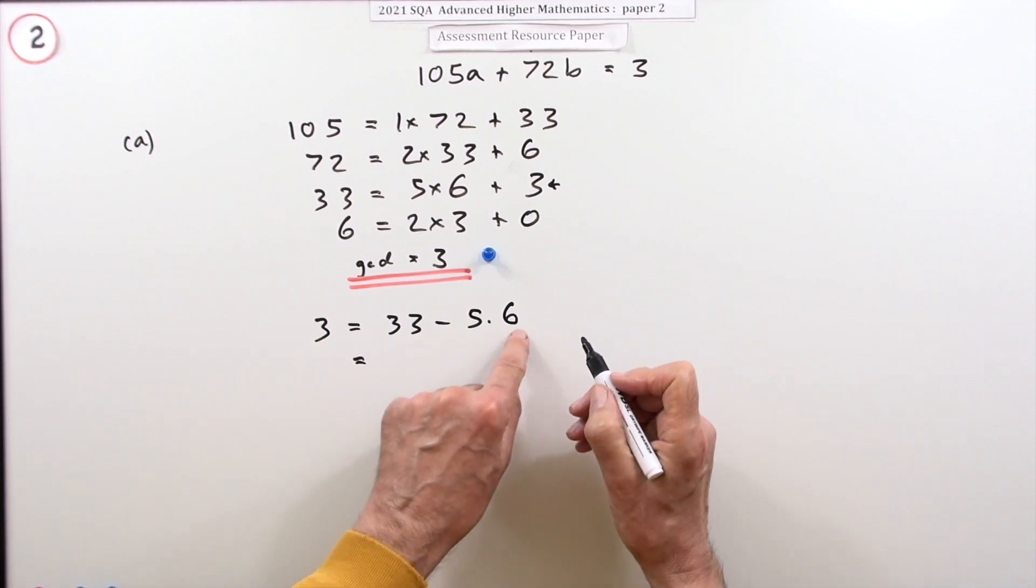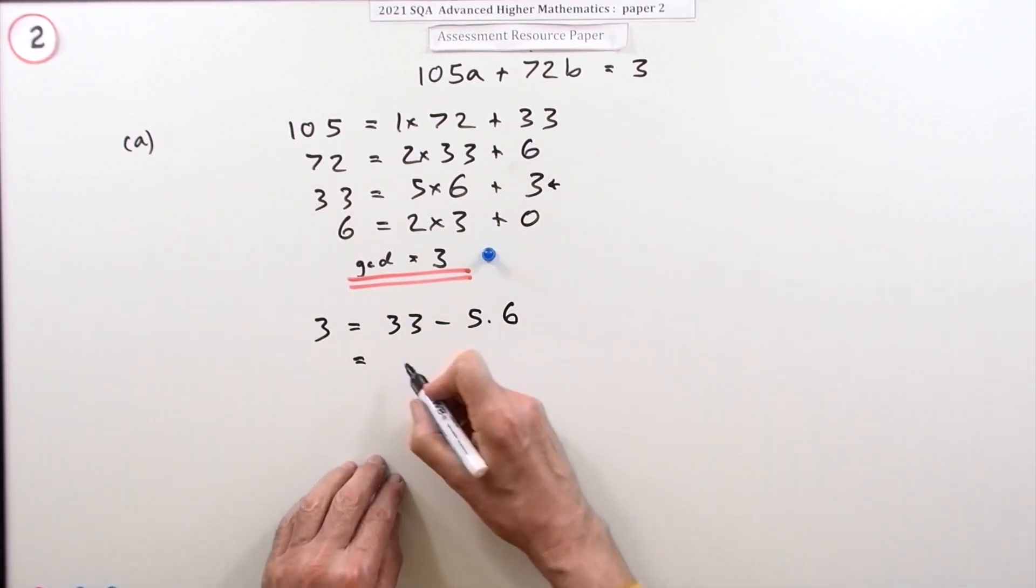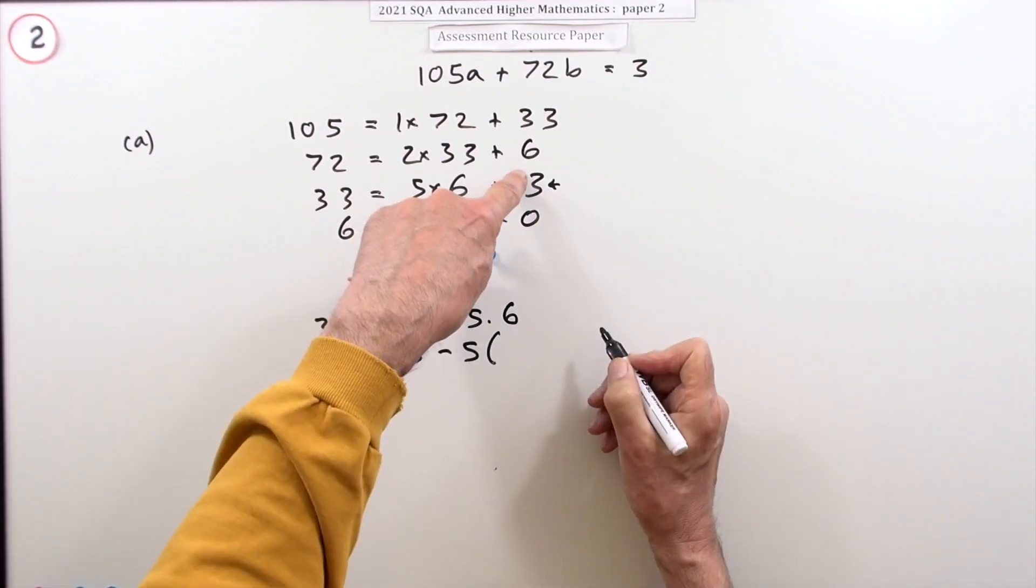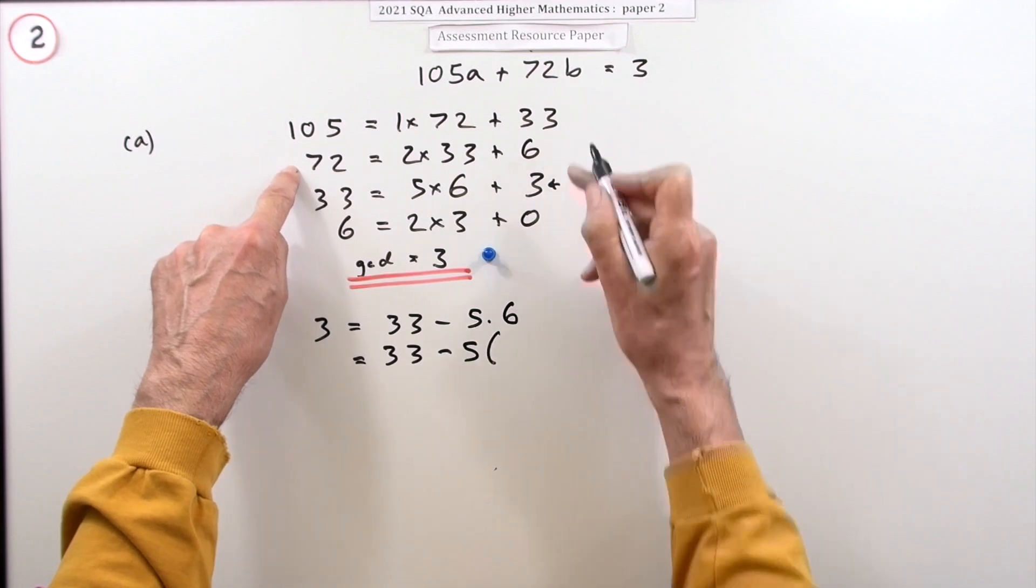Now I can change one of them. That six can be changed using this line. What can six be replaced by? Stepping up to this line, that was 72.